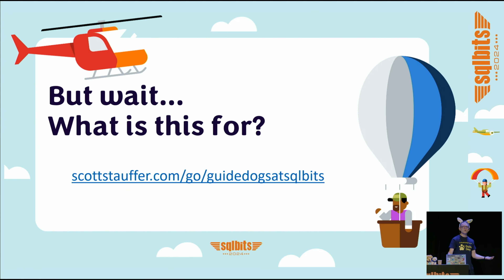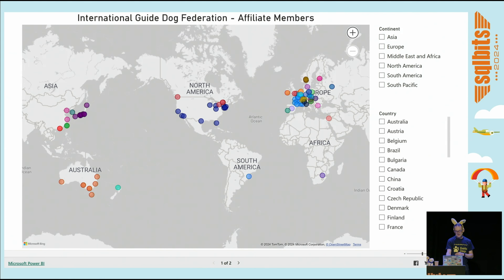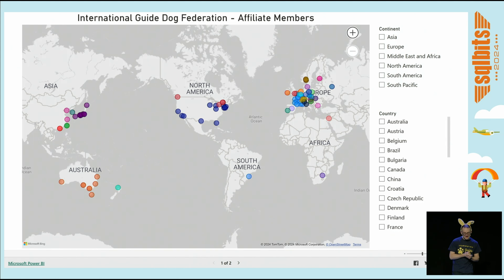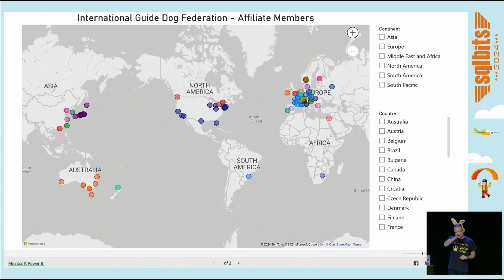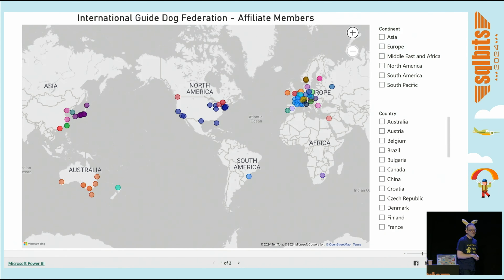What are we attempting to produce at the end of this? At the end of the second leg of the journey, what we would hope to produce is something that looks a little bit like this — a Power BI report. With the data that we've scraped from the International Guide Dog Federation, we'll have locations of all of the affiliate members, and we'll be able to use tooltips and hover-over to find more pertinent information so that people can donate, volunteer, call up, go visit some of these international associations.